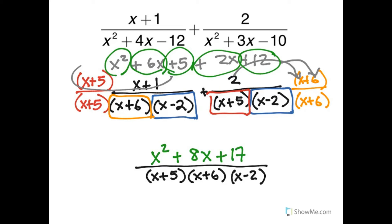Now, x squared plus 8x plus 17 is not factorable. 17 has only the factors 1 and 17. I can't get an 8 with that. But that means I'm done. Hooray!